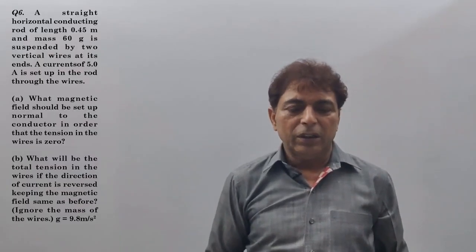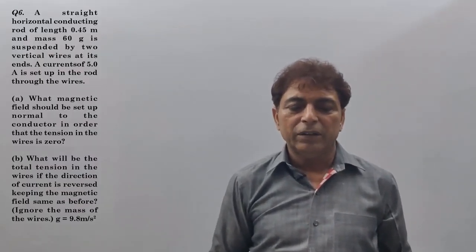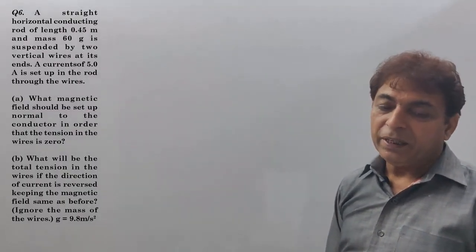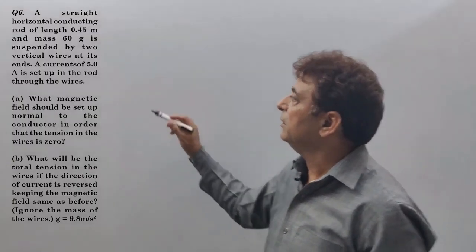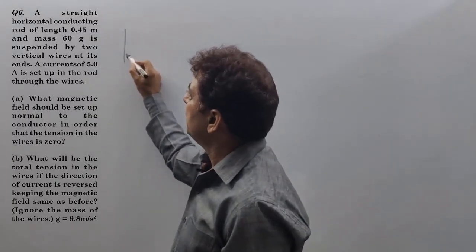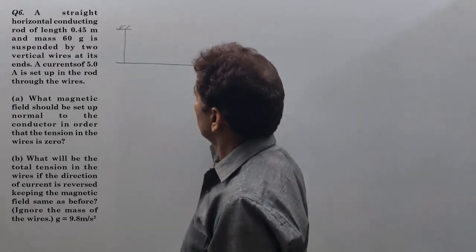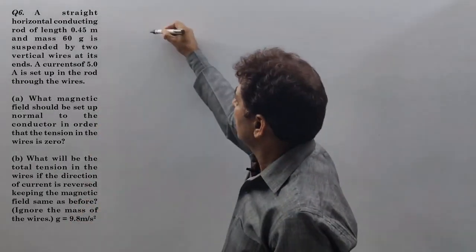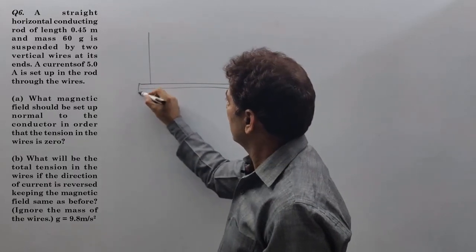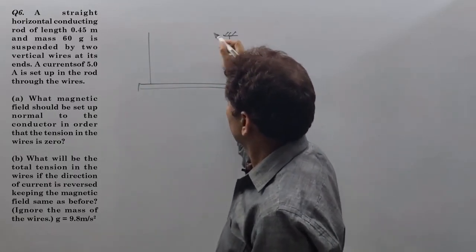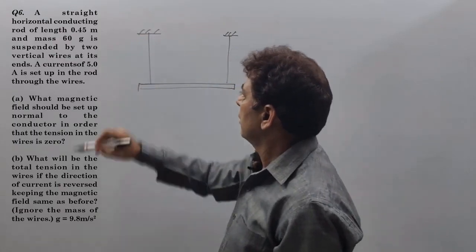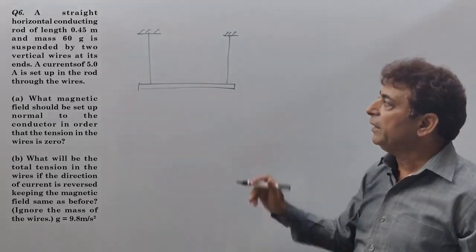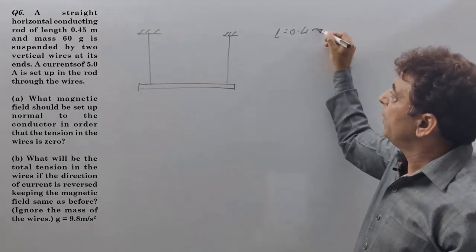A straight horizontal conducting rod of length 0.45 meter and mass 60 gram is suspended by two vertical wires at its ends. Question is a straight horizontal conducting rod of length 0.45 meter.